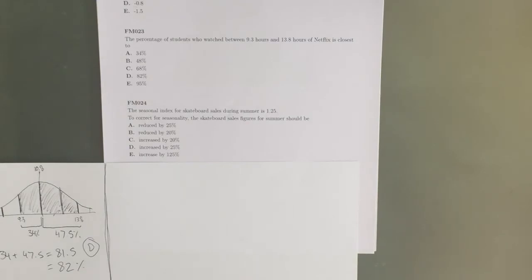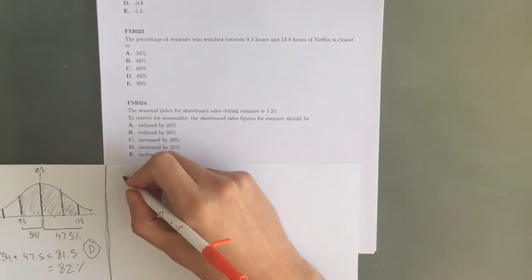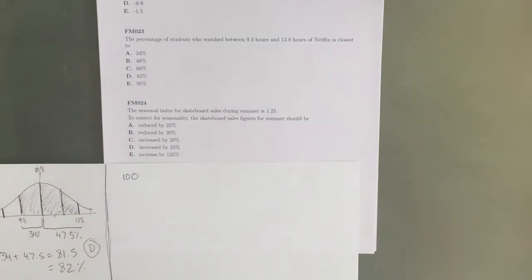To figure out a question like this using the seasonal index, basically what we want to do is take a nominal sales figure, so let's just use a number like 100, and in order to correct the seasonality, we divide by the seasonal index, so in this case 1.25.